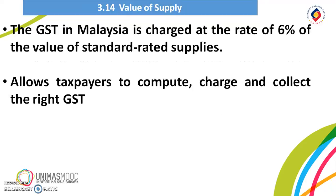Fourth is the value of supply. The GST in Malaysia is charged at a rate of 6% of the value of standard rated supplies. Therefore, taxpayers need to understand how the supply is valued to be able to compute, charge and collect the right amount of GST.